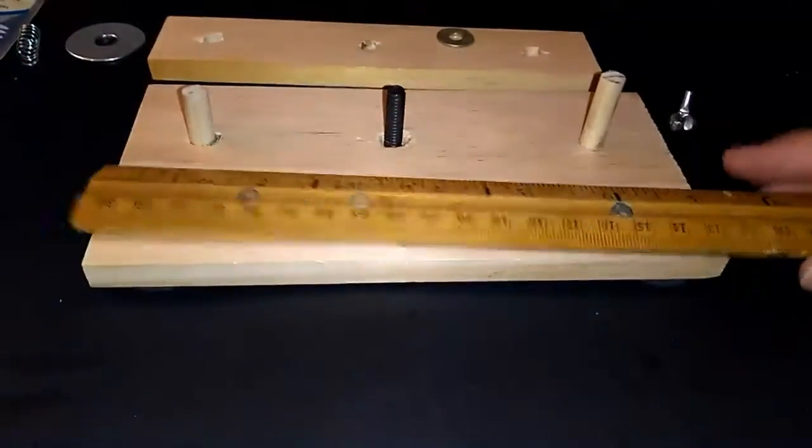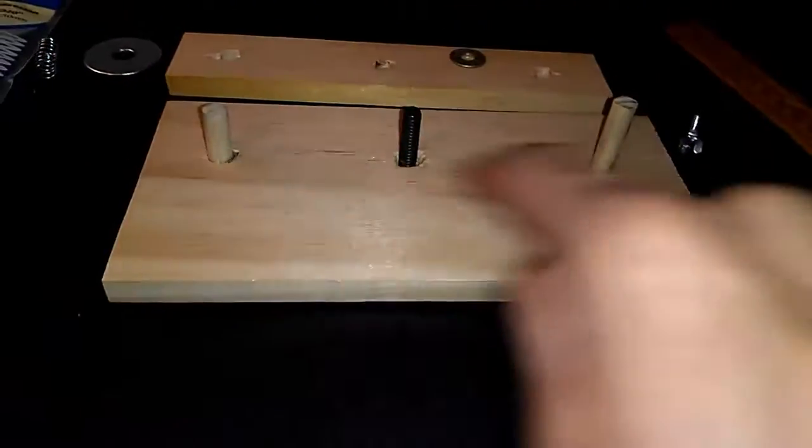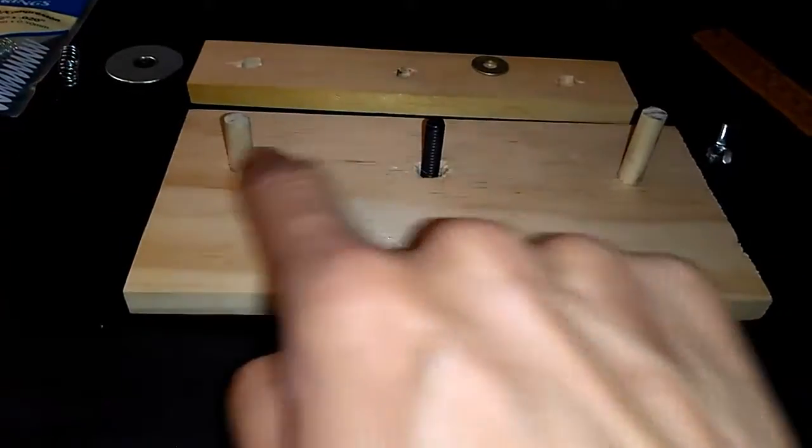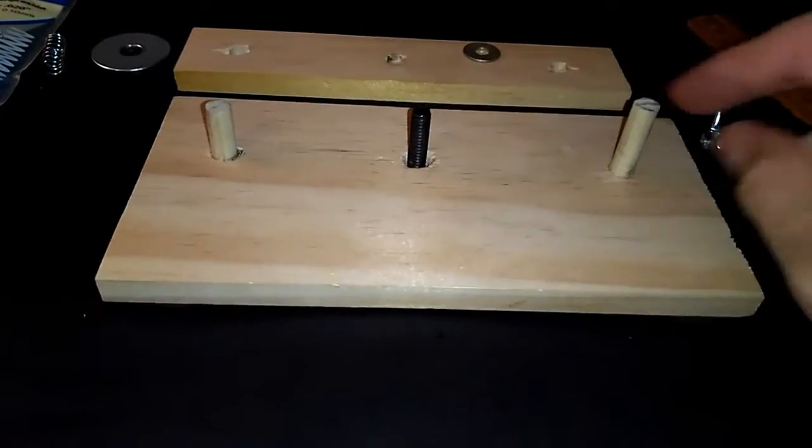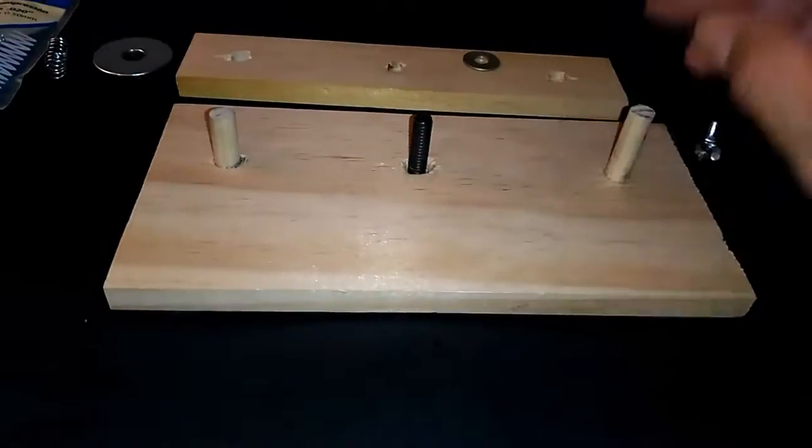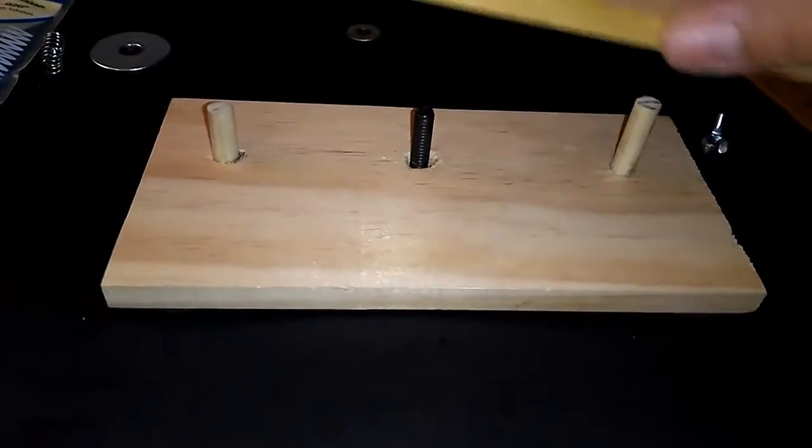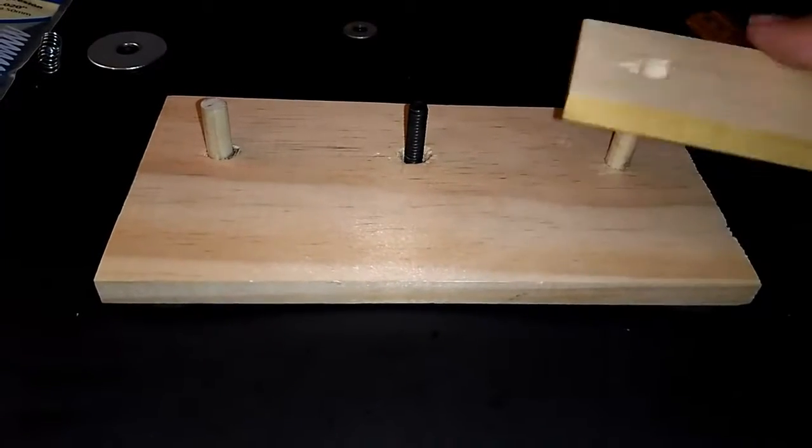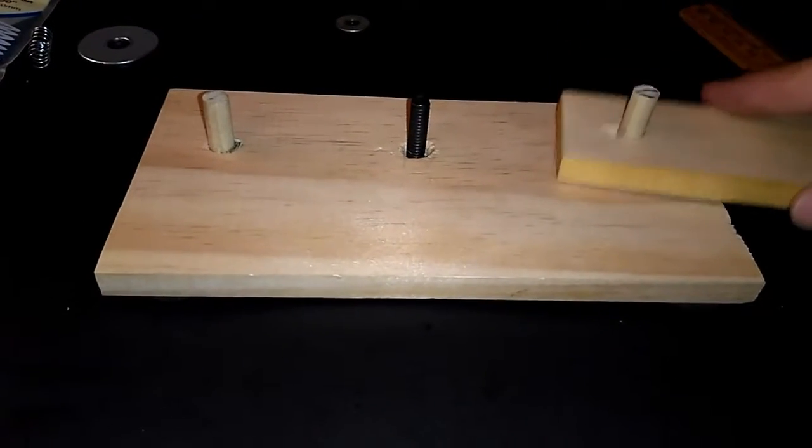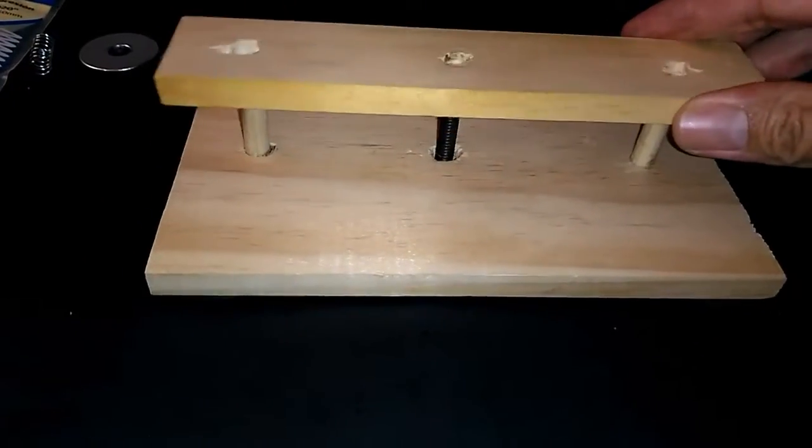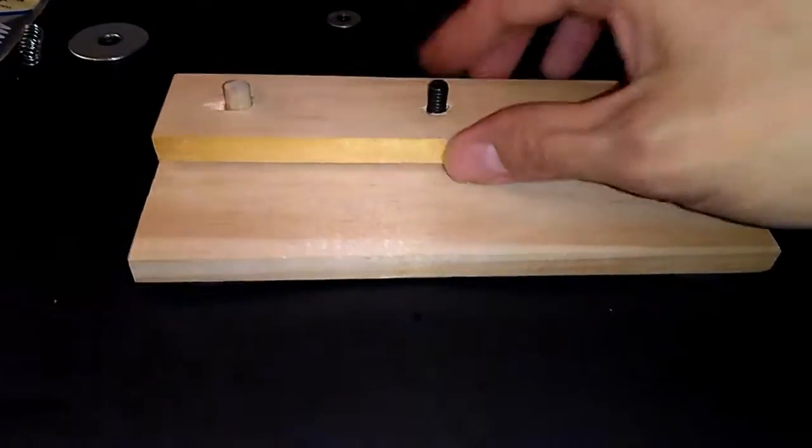And then I screwed three holes and then I put in a dowel. The holes are the same size as the dowel here on the bottom of the bottom piece. And then for the top piece I went ahead and made the holes a little larger than the dowel so that it can slide up and down freely on both sides. Like this, slide up and down.